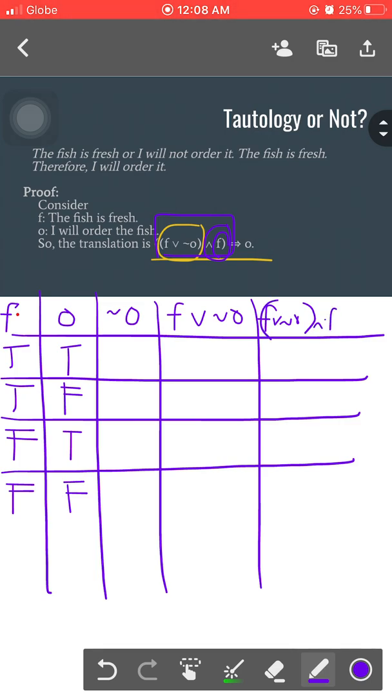And the next column heading would be finally the final argument that we have here, which is F or not O and F would imply O. Since I don't have much space here, why not, let's just label this.